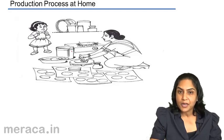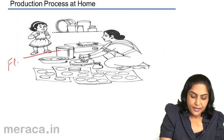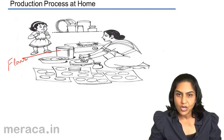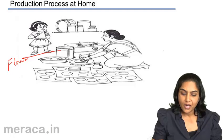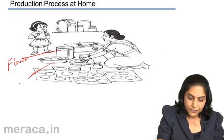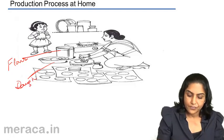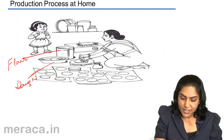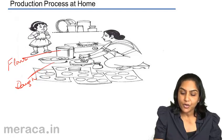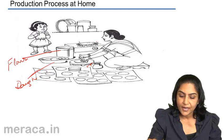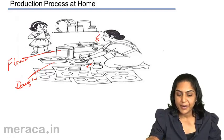There is flour in this container which is mixed with some water, salt and oil, and kneaded to make a dough. These are then separated into small balls which are then flattened by a rolling pin. Finally, the bread is made and we get rotis.